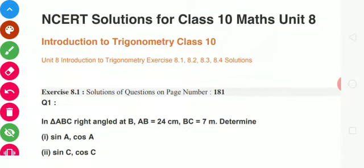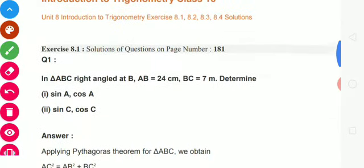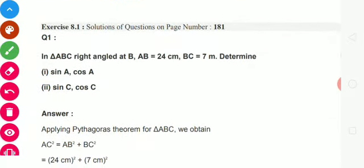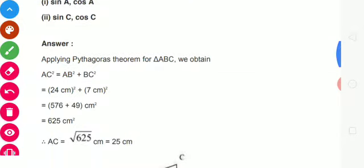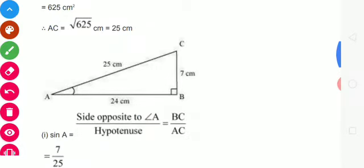So students, I am going to start Exercise 8.1 for class 10th. Yahan 8.1 ka jo question hai, pahle haam loog question padhte hain, uske baad iska solution banayenge. Question hai: In triangle ABC, right angle at B, AB = 24 cm, BC = 7 cm. Aayiye dekhte hain — ek right angle triangle banate hain.